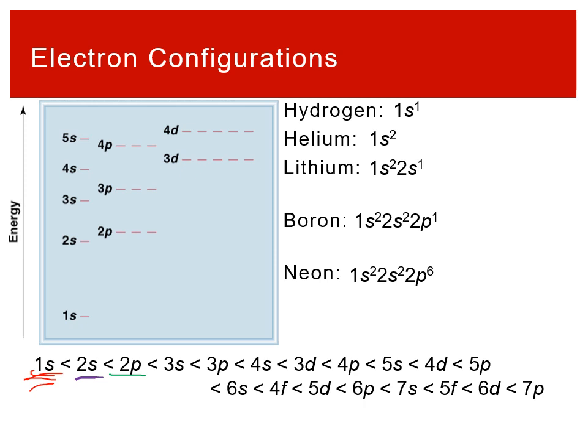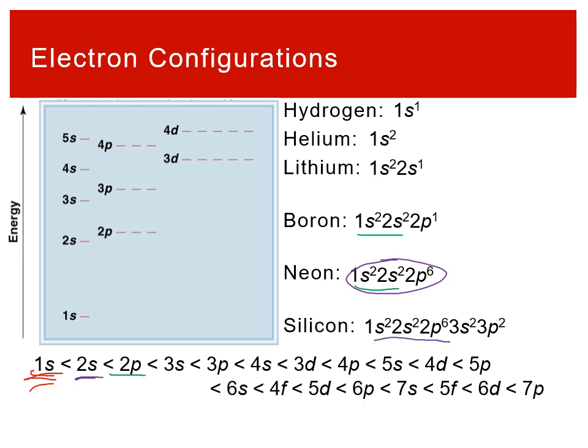Neon has the configuration 1s² 2s² 2p⁶ — ten total electrons, filling 1s, then 2s, then the full six in 2p. For silicon with fourteen total electrons, we can see that the first ten electrons from neon show up in the same subshells, and we just keep building up from there. Anything with more electrons than a given atom will still have all those previously filled subshells full, and we just continue expanding the pattern.